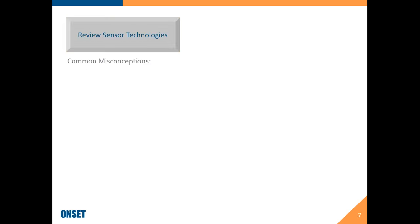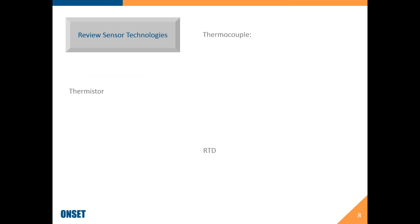The next thing we're going to talk about is the sensor technology behind data loggers, which is very rarely talked about but is actually really important to what you're doing when monitoring temperature. The big misconception is that all data loggers are the same. At the end of the day, there are really three different types of technologies that drive data loggers: thermocouples, which are traditionally what people use in laboratory and testing environments; thermistors, which are what you see in most commercially available data loggers; and RTDs, which are a newer technology you're starting to see more in the commercial space.